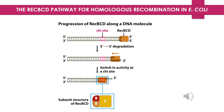RecBCD is composed of three subunits — RecB, RecC, and RecD — and has both DNA helicase and nuclease activities. Upon encountering the CHI sequence, the nuclease activity of the RecBCD enzyme is altered. RecBCD protein binds a little ahead of CHI sites and keeps on degrading both strands, but the degradation of the 5' strand is more in comparison to the 3' strand, leading to formation of a 3' extension. Upon RecBCD proteins reaching the CHI site, the degradation stops.